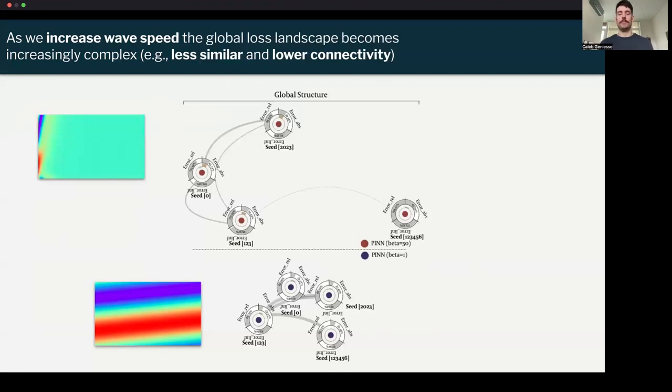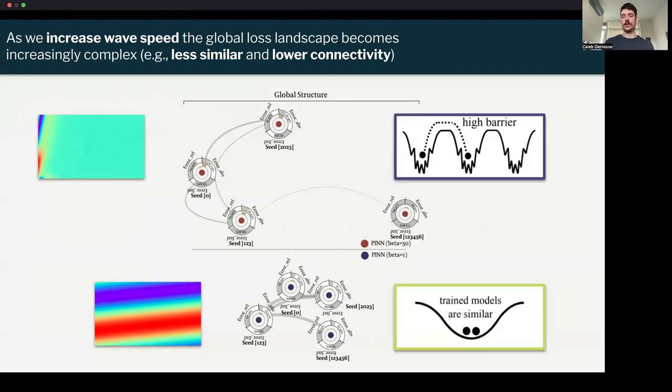We can further distinguish which landscapes we're seeing by looking at the global structure. This is where these other metrics come into play. We can see that as we increase wave speed, we actually see lower connectivity and less similar models. We can map on the prototype examples. We can see that when the model's failing, we may see a higher barrier between different minima. When the model succeeds, we're seeing low mode connectivity, a smoother landscape, and more similarity between the models, which may be due to the soft constraint that we're placing on the problem.